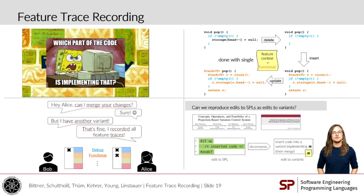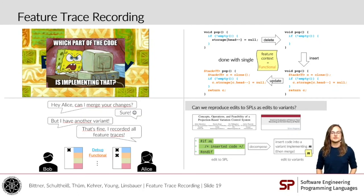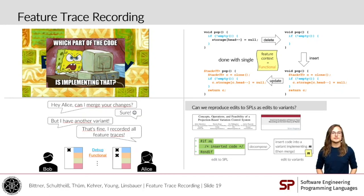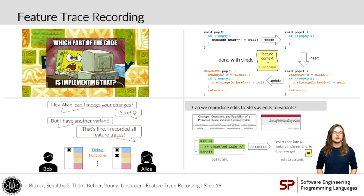To summarize, we saw that Feature Traceability is still a big problem, but with Feature Trace Recording, we unlock software evolution as a new source of information for Feature Location tasks. In particular, we can derive multiple Feature Mappings from just a single Feature Context, and sometimes even incomplete knowledge on Feature Traces is already enough when recorded correctly to synchronize variants in a multivariant software system. And last but not least, we support common edits to variability and can sometimes make the specification of Feature Traces easier. Thank you very much for your attention.